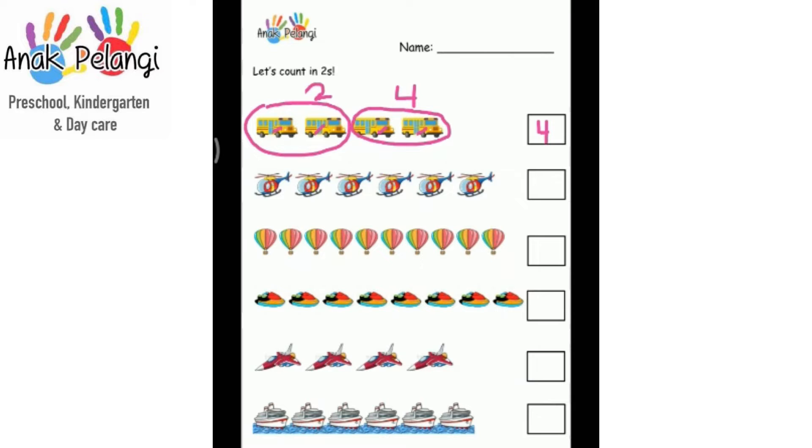Count in twos for the helicopters. Circle them first. Now let's count them in twos. One, two. Three, four. Five, six. Two, four, six. How many helicopters are there? Six. Write six in the box.